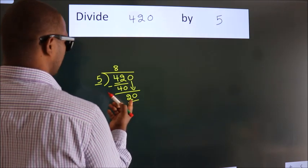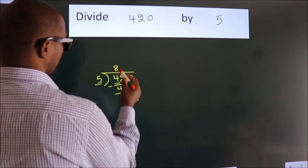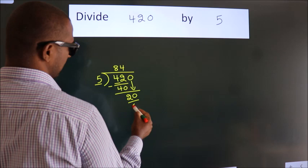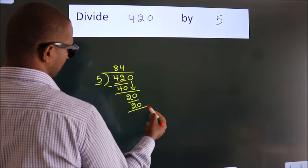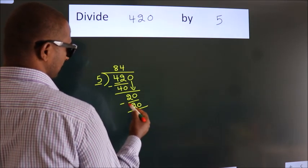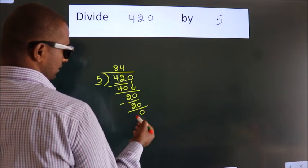When do we get 20 in the 5 table? 5×4=20. Now we subtract and we get 0.